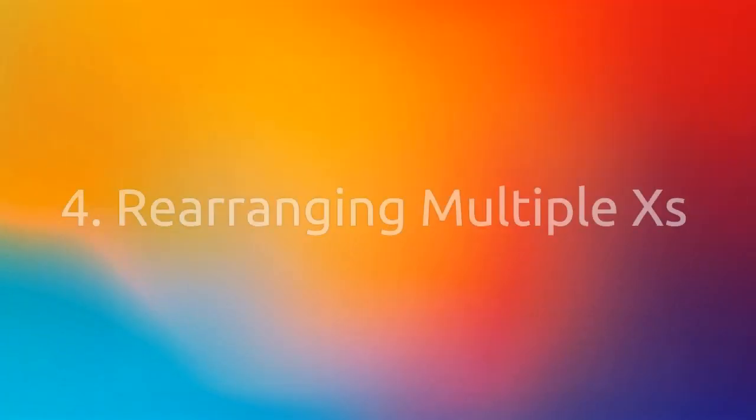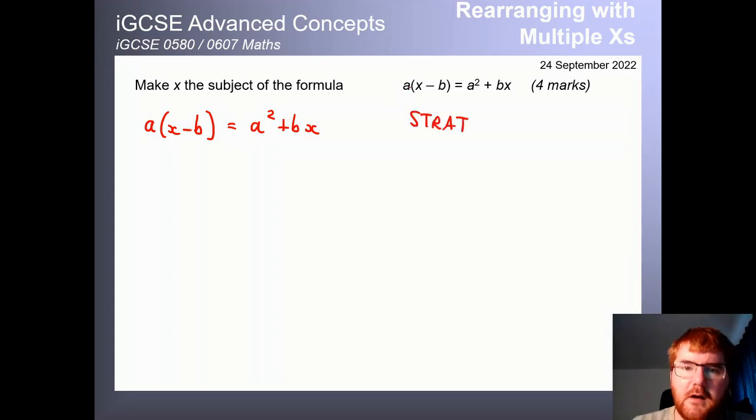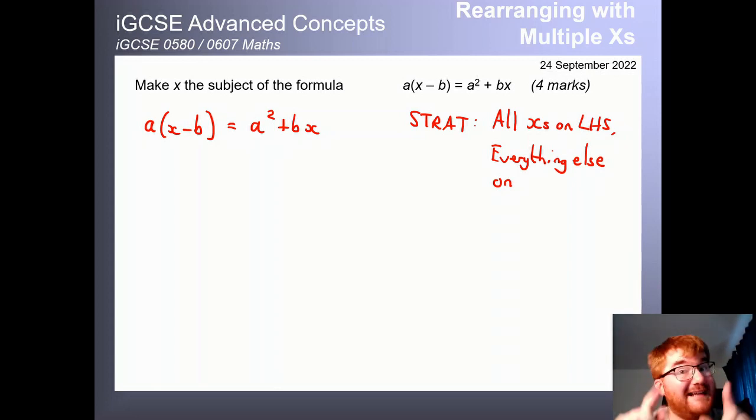So we're rearranging with multiple x's. So I'm going to go through an example together here. And this is a four mark question. So there's quite a lot of marks available for you. And then we'll do an exam question from 0580. So we want to make x the subject of the formula. So I'm just going to write out our equation and our strategy. So this is the key strategy. Whenever you get more than one x when you're rearranging, we want all things with x. So all the x's on left hand side, everything else on the right.